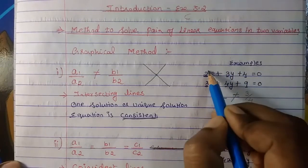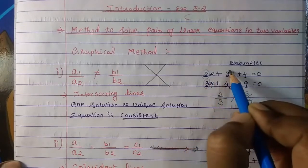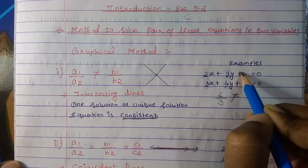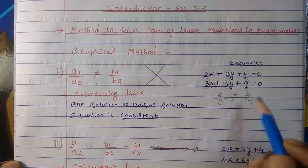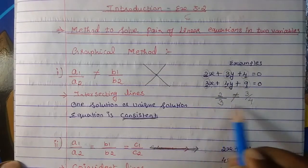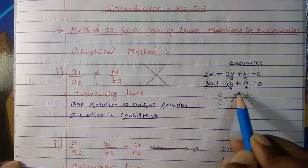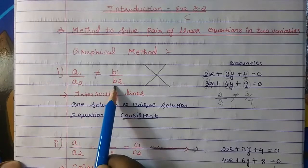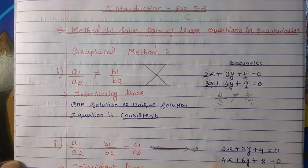So here, this is our a1, this is a2, this is b1, this is b2, and this is c1 and c2. When we compare, we have to see the first two — compare and see. If both are not equal, then in that condition our graph will be intersecting.